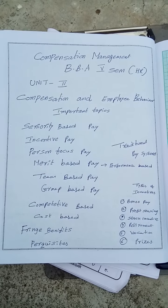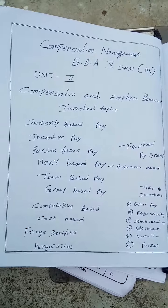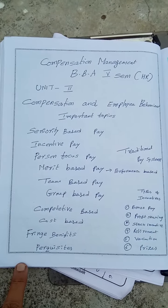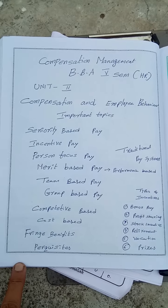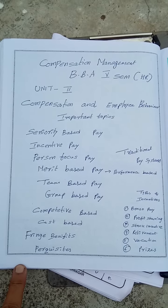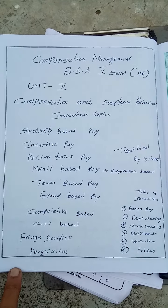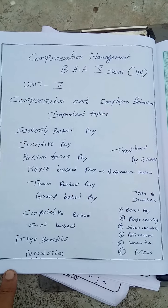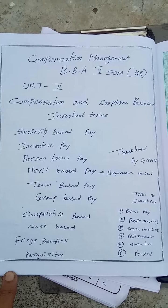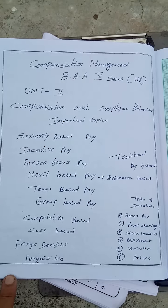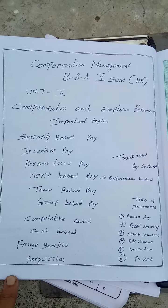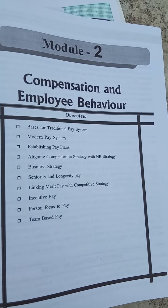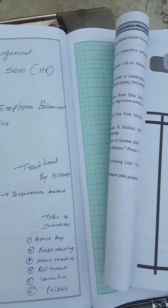Under the traditional pay system, before the employee is taken into the business, we will say how much is the basic pay and what are the allowances that he is going to get. That is said to be the traditional basis of payment of compensation to the employees of the organization. When the modern pay system came into existence, this includes payment of bonus and giving of incentives and all.